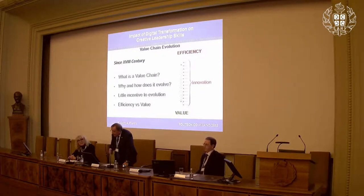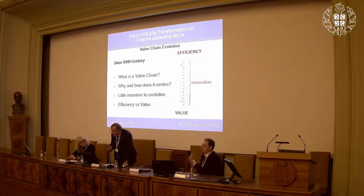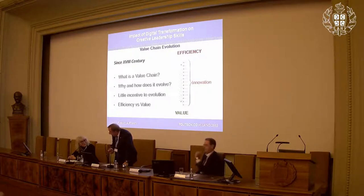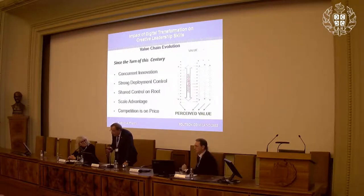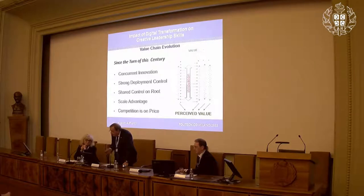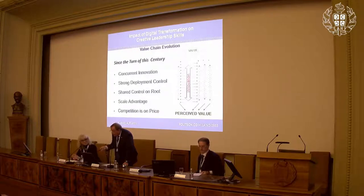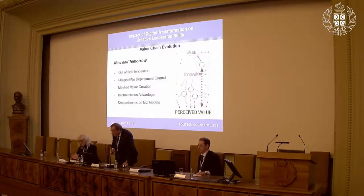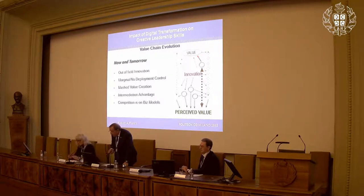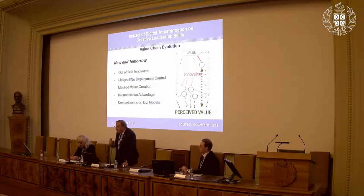We are passing from value chain to a new value chain concept. In the past, efficiency was the key to getting more value through continuous innovation — small steps to gain efficiency and increase value. Now we're talking about value chain evolution: perceived value and innovation in parallel sectors, concurrent innovation, strong deployment control, shared control on routes, scale advantage, and competition on price. But right now and going forward, you'll see out-of-field innovation, margin and non-deployment control, shared value creation, intermediation advantage, and competition on business models — not on objects any longer, just on business models.